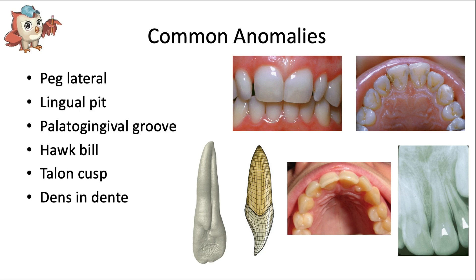An important feature of the maxillary lateral is that it's the most likely tooth to be malformed. First up is the peg lateral — this is a microdont, meaning an undersized tooth, specifically affecting the maxillary lateral incisor. These small malformed laterals happen in about two percent of patients, so they're fairly common as far as tooth malformations go. The lingual pit is where the mesial and distal marginal ridges extend too far and meet at the cingulum, creating a pit. The risk for staining and caries in these pits is very high, so sealants are sometimes placed there proactively.